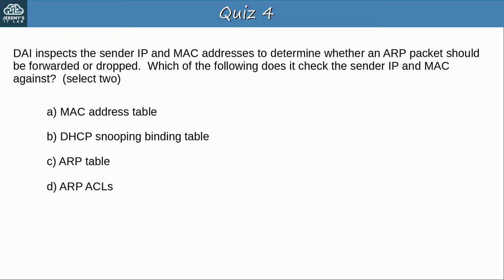Question 4: DAI inspects the sender IP and MAC addresses to determine whether an ARP packet should be forwarded or dropped. Which of the following does it check the sender IP and MAC against? Select 2. The answers are B — DHCP snooping binding table — and D — ARP ACLs. When DHCP snooping is enabled, the binding table is automatically built as hosts lease IP addresses from DHCP servers, and DAI uses that table to check ARP messages. For hosts that don't use DHCP, ARP ACLs can be manually configured to permit their ARP messages.